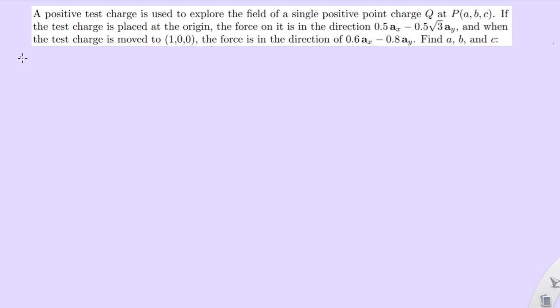So here we go. Let's start. So Q is at P, which is A, B, and C. Okay, that's one thing we know. What else do we know? So we know that at the origin, we'll call this point 1, which is 0, 0, 0. F is equal to 0.5 in the X, 0.5 square root of 3 in the Y, and 0 in the Z.